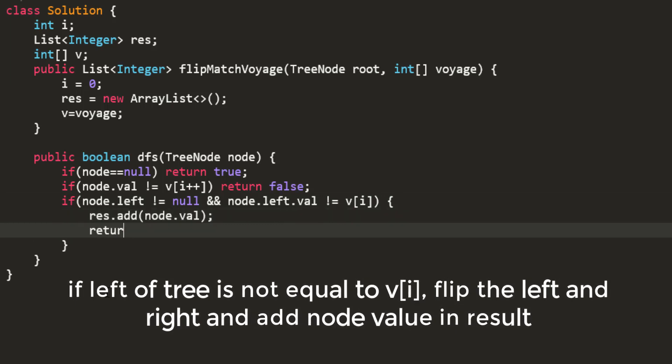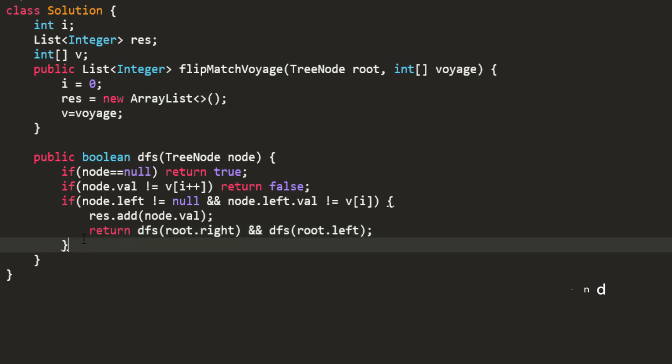For flipping we'll be doing our reverse DFS, that is first on right and then on left. If we do not need to flip this, that means the example is correct and so we need to do our normal DFS, so we return DFS of left and right.